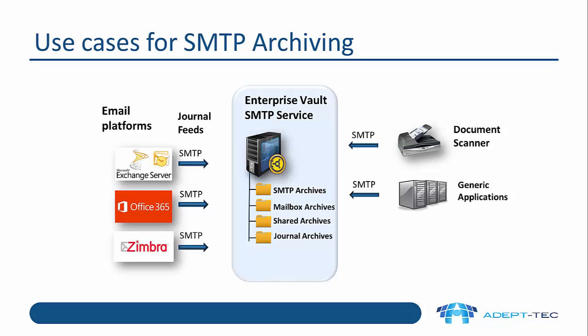Those emails could come from a journal feed from an Exchange server, or from Office 365 — so we could journal out of Office 365 to an Enterprise Vault server running the SMTP service. Also many other devices such as scanners and printers can send SMTP emails, so they could be ingested using the SMTP service. Generic applications can also send log files using SMTP, so all that information can be ingested into Enterprise Vault using SMTP archiving.